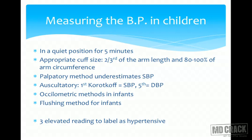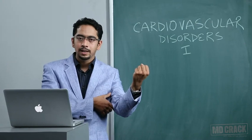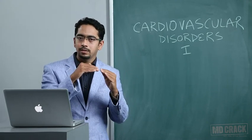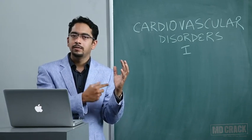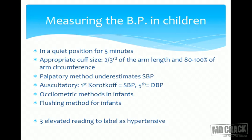For infants it is often difficult to obtain auscultatory blood pressure, so we use the flushing method: tie the cuff to the infant's arm, exsanguinate the arm by pressing, raise the mercury, then slowly release it — as soon as the mercury hits the level of systolic blood pressure, the blanched hand will turn red. We must have three independent elevated readings before labeling a child as hypertensive. White coat hypertension, where the child is afraid of the doctor and transiently shows elevated BP, should be recognized.